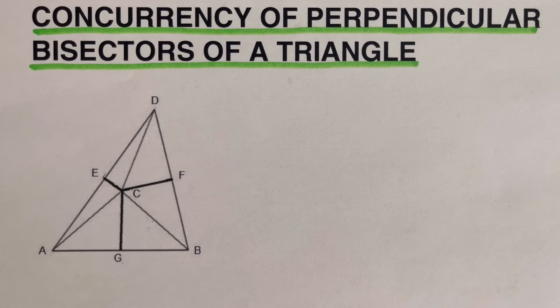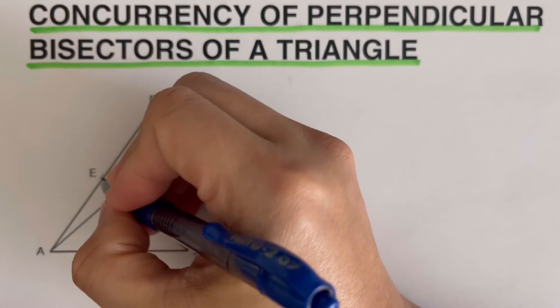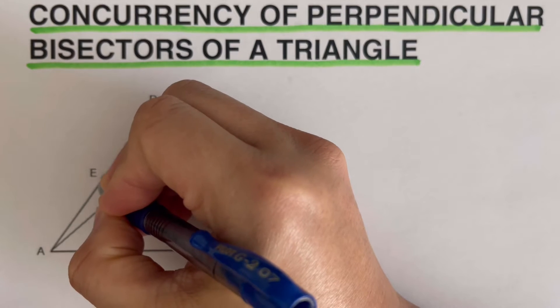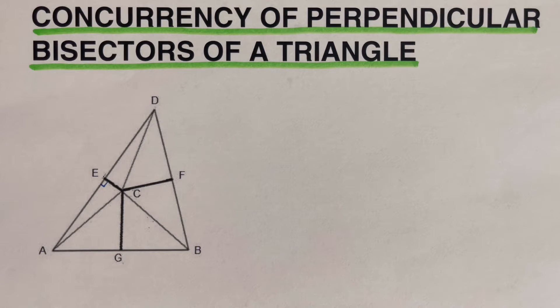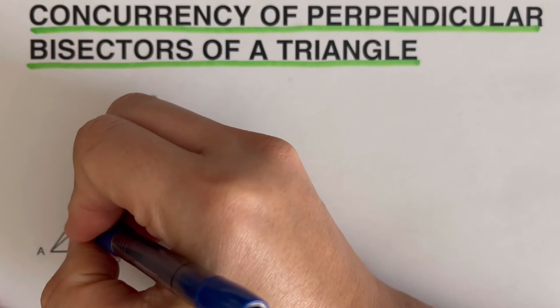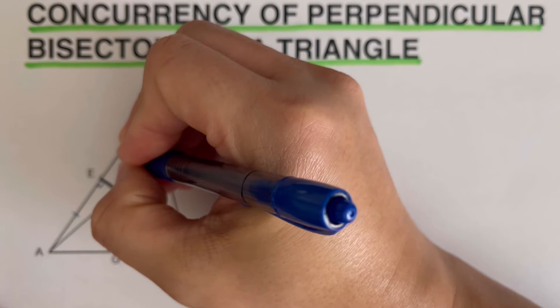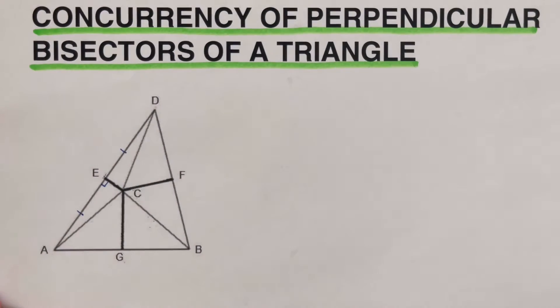So in this picture that we have here, EC, GC, and FC are perpendicular bisectors. This means that this angle right here is 90 degrees. Another important information when it's a perpendicular bisector is that it cuts the line segment into two equal pieces. So this piece right here, AE, is congruent to ED.